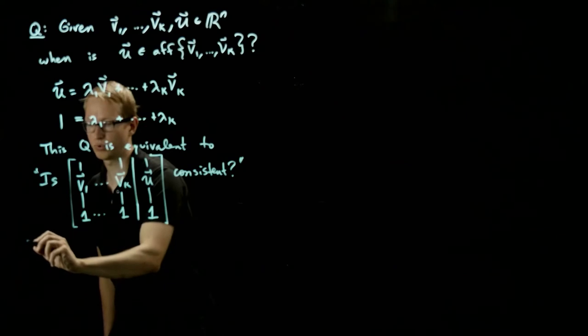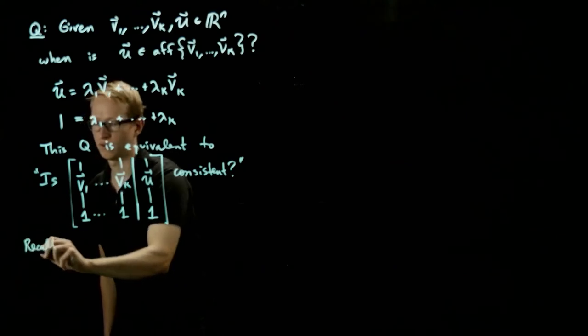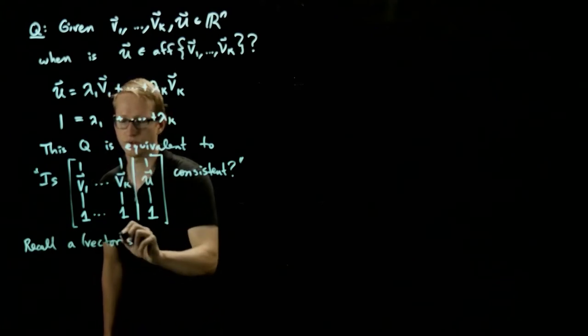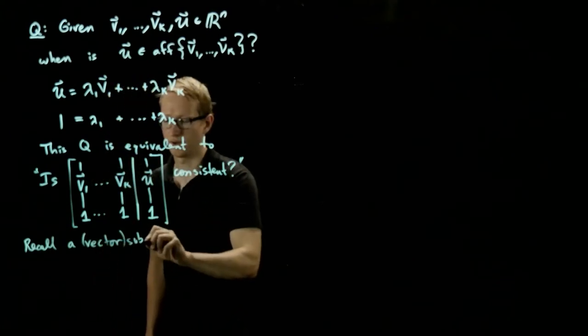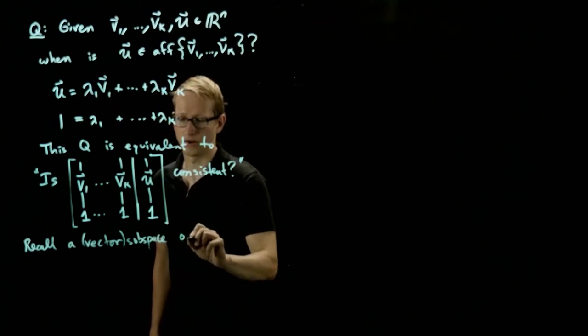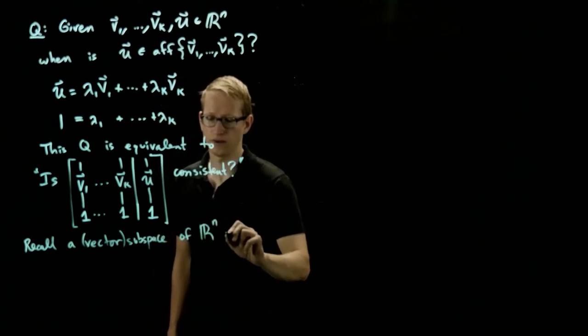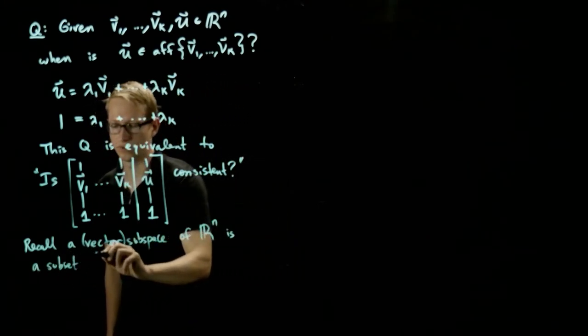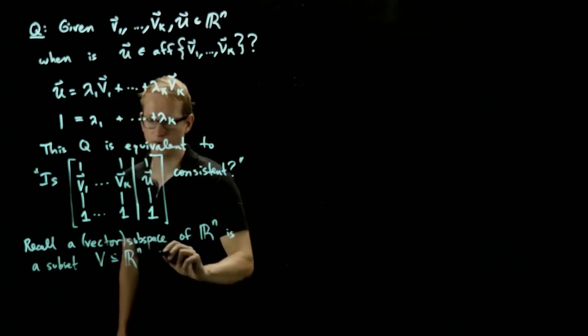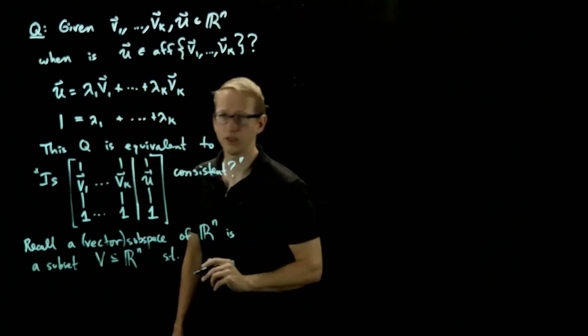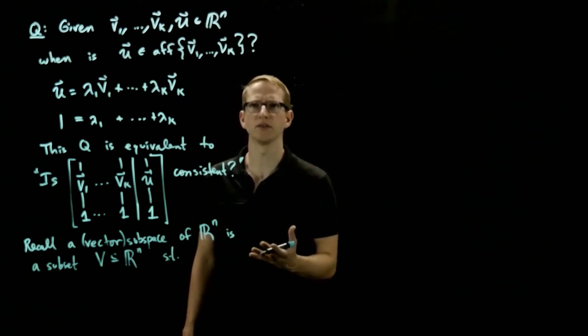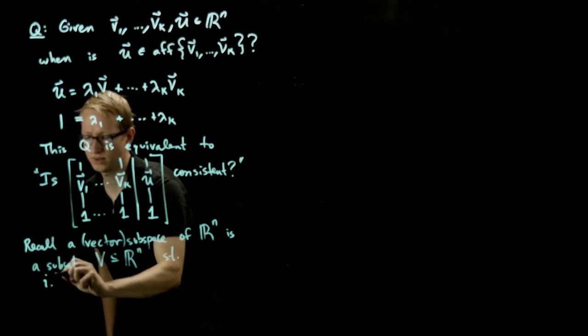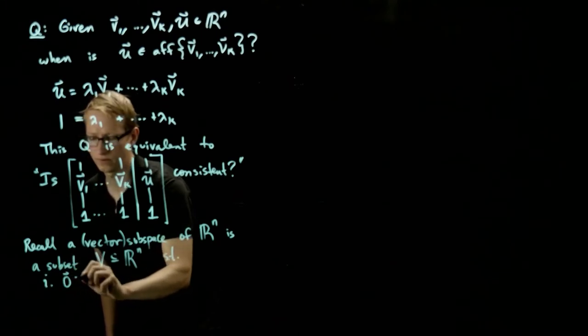So for this, let's just briefly recall a vector subspace. A vector subspace of R^n is, first of all, a subset, let's call it V, such that three conditions hold. Now there are many equivalent ways to define such a thing, but this one seems pretty concise and simple. And the first condition is that the zero vector is in V.